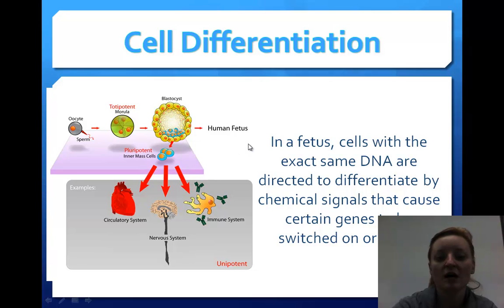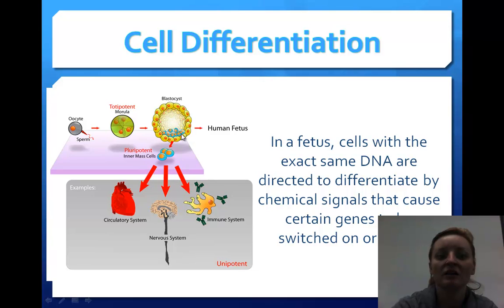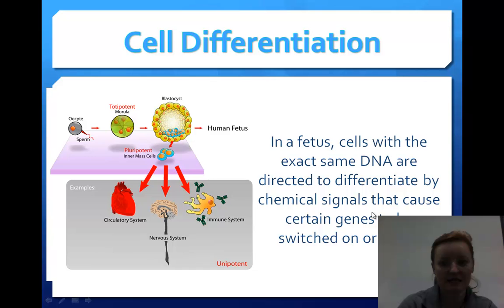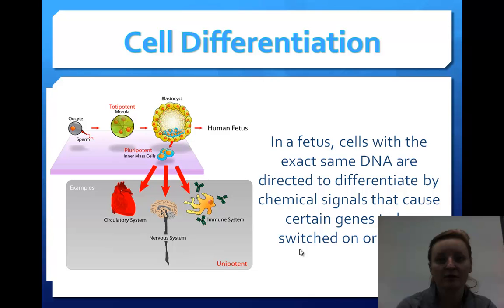Before you become a true human fetus, you are a big ball of cells — a blastocyst. Some of the inner mass cells don't know what they want to be when they grow up, so they still need to differentiate and figure out their jobs. It is the genes that switch what gets turned on or off; if you're going to be a heart cell, anything needed for the heart gets turned on and everything else gets turned off.